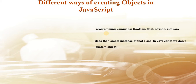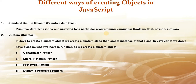There are different ways to create objects in JavaScript. First, we have standard built-in objects — objects already created in JavaScript for us to use. For example, boolean, float, string, integer data types, and arrays are all predefined built-in objects. We simply make instances of these. The four ways of creating custom objects in JavaScript are: the constructor pattern, the literal notation pattern, the prototype pattern, and the dynamic prototype pattern — all of which we will cover in Season Two.